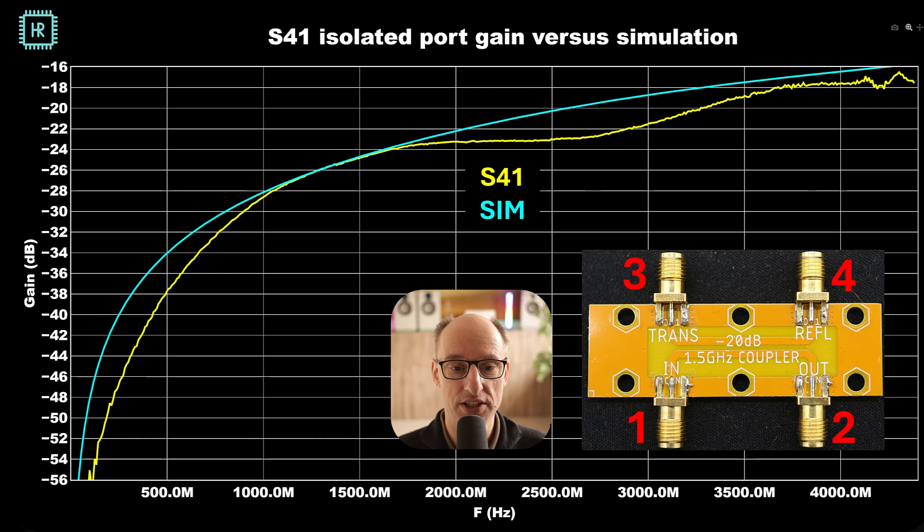Same thing is true for the isolation. So that's the gain from port 1 to port 4 basically. And we see that at 1.5 GHz these numbers are right on top of each other. So it's amazing how close you can get with this very simple board material and how incredibly predictable everything is.